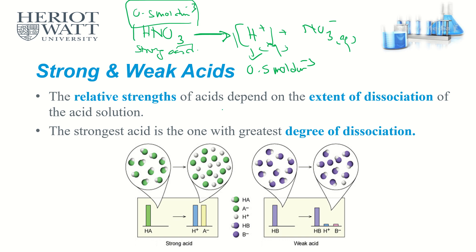The diagram shows this clearly: for a strong acid HA, you get the same concentration of H⁺ as you started with. For weak acid HB, you only get a much smaller amount of H⁺. The key check: if the equation shows a complete arrow, it's strong; if it shows a reversible arrow, it's weak.